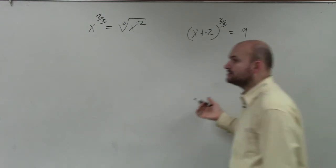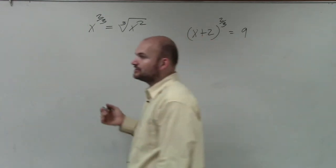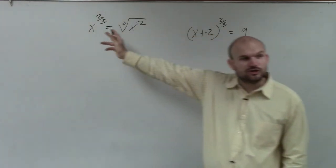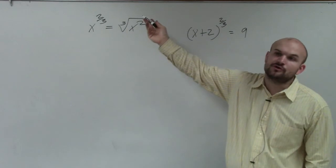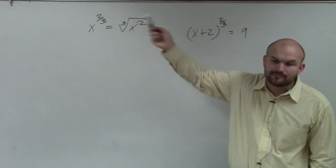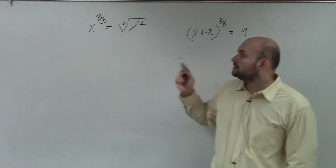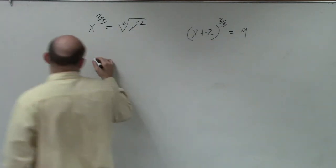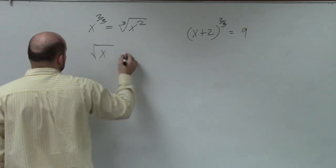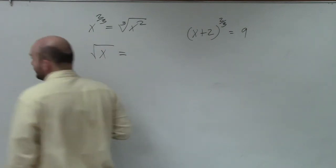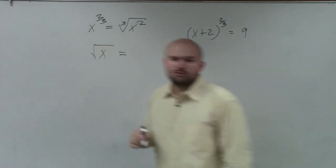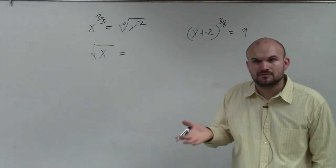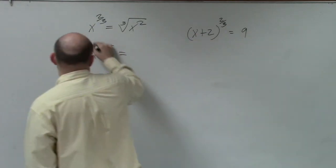What I want to do is: if we want to undo the cube root, then we'd have to raise it to the 3rd power. Well, if you look at the square root — if I want to undo the square root, what exactly do I have to do? I have to square it.